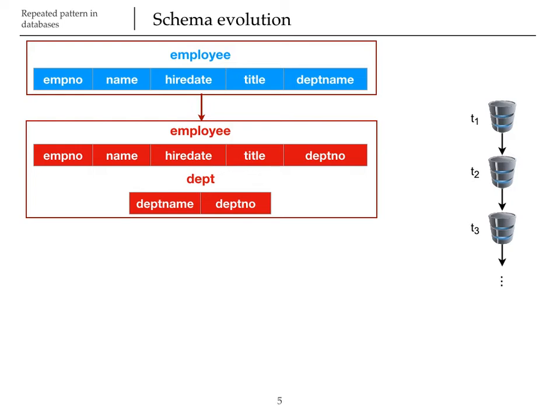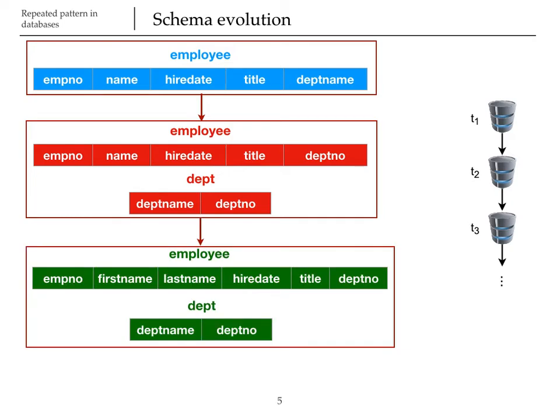As the company grows and hires more employees, we normalize the employee relation by breaking the name attribute into two attributes. This behavior continues as time goes on. Note that we cannot just throw away the older schemas since some parts of the company may rely on them. So we want to be able to access this database under any of these schemas.